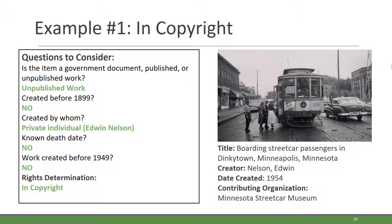Follow along by looking at the rights review workflow. Beginning at the top, let's first determine if the item is a government document or a published or unpublished work. It's an unpublished work. Was it created before 1899? No. Who was the creator? Edwin Nelson, a private individual. Does Edwin have a known death date? No. Was the work created before 1949? No. With those facts, our rights determination is that this work is in copyright.